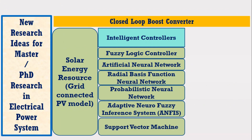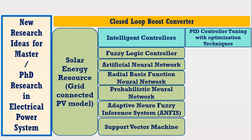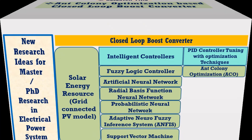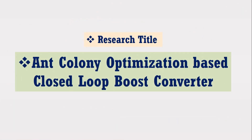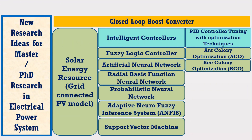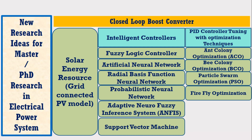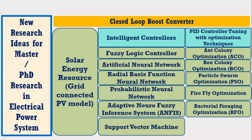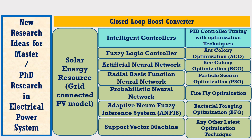In the second option, we can use PID controllers and try to optimize its parameters using latest optimization techniques such as ant colony optimization. In that case, your topic will become ant colony optimization based closed loop boost converter. You may also add bee colony optimization, particle swarm optimization, firefly optimization, bacterial foraging optimization, or any other latest optimization technique in this model to extend your research.